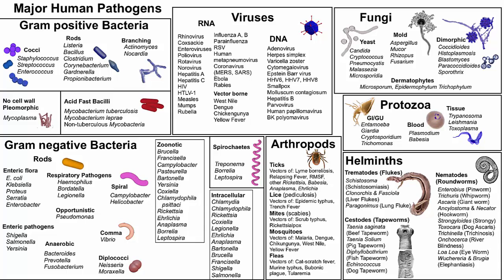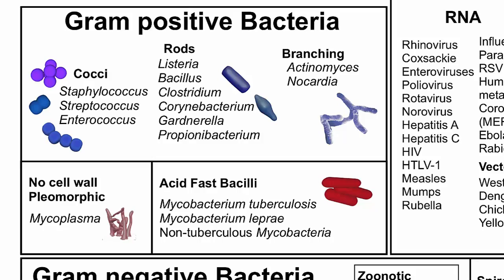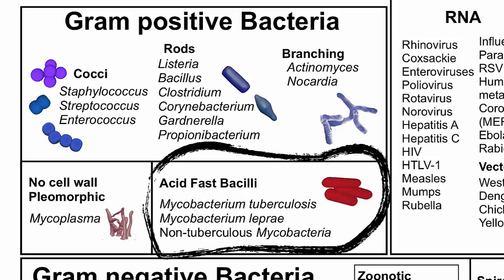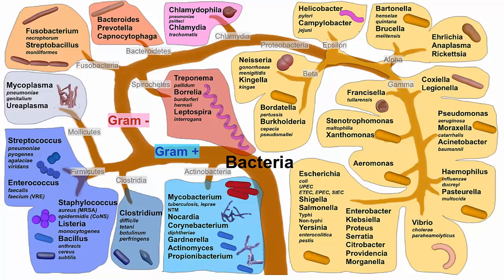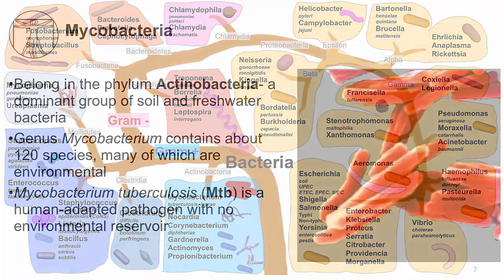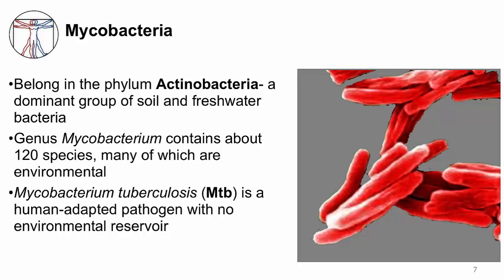Mycobacteria are gram-positive bacteria but have a unique lipid-rich cell wall that stains differently than other bacteria, and thus they are classified clinically as acid-fast bacilli. On a phylogenetic tree, mycobacteria are one of the oldest bacteria, branching out from the common gram-positive ancestor. They belong to the phylum Actinobacteria, which is a group of soil and freshwater bacteria that dominate these environments.